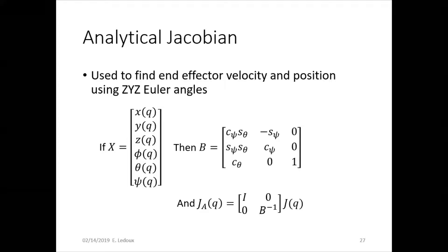This is how the analytical Jacobian works. You find end effector velocity and position using Euler angles. To get the analytical Jacobian, the first row is pretty straightforward. You have identity matrix and then zero. Remember, each of these is a three by three, because this Jacobian would be a six by six.